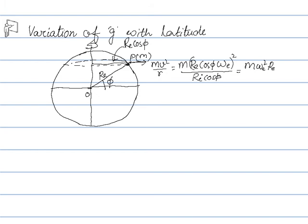Re and Re cancel out, and one Re·cos²φ simplifies, so after cancellation cos φ remains. This gives the centrifugal force directed outward.